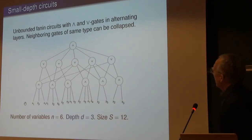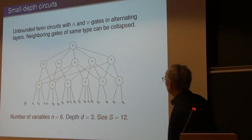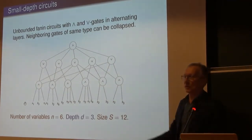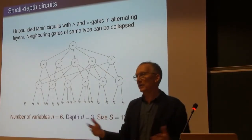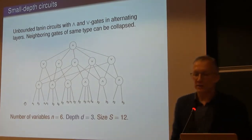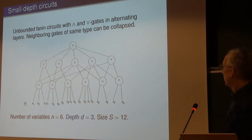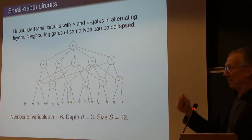Where are we today? We're mostly dealing with small depth circuits. We have AND gates and OR gates with alternating levels — if you have an AND gate feeding into another AND gate you can short-circuit it up to the higher AND gate. The number of Boolean variables is L, the depth is D (this is 3 in this example), and the size is capital S (size 12 here). This is a random circuit I constructed — I have no idea what it computes.